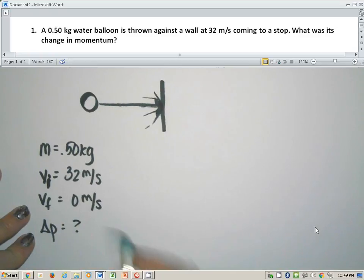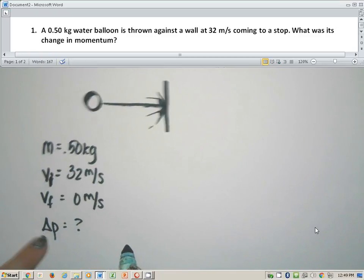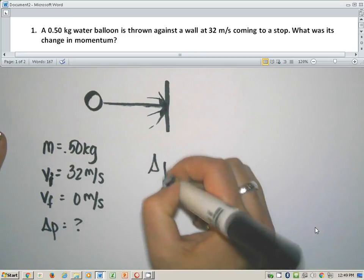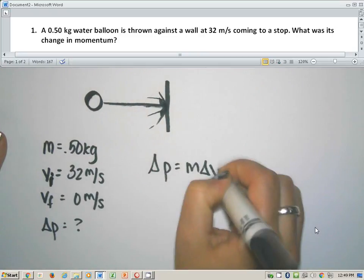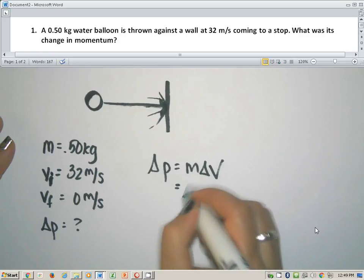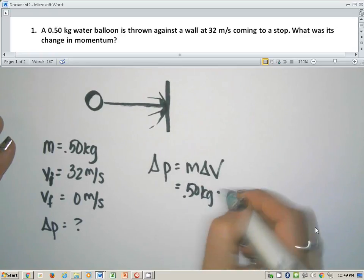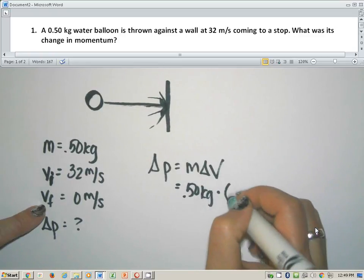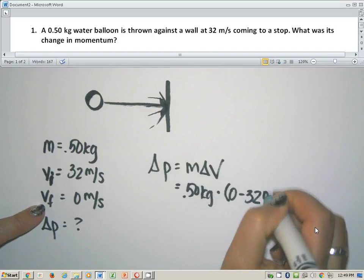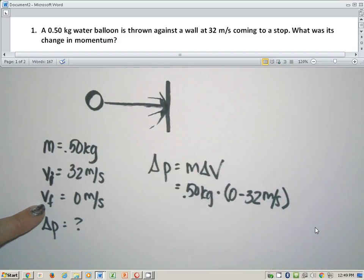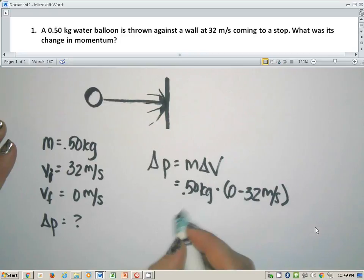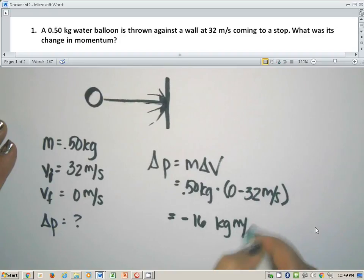So as soon as it says change in momentum, I've got the delta v problem. So we're going to plug this in to delta p equals m delta v. m is 0.50 kilograms. Velocity is going to be 0 minus 32 meters per second. And if we work this out, we'll end up with an answer of negative 16 kilograms meters per second. So right here is my answer to the problem.